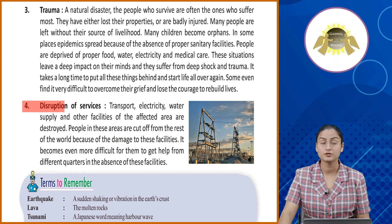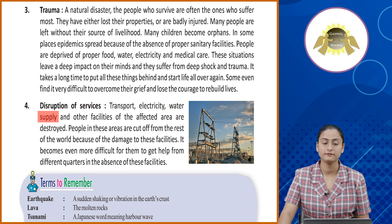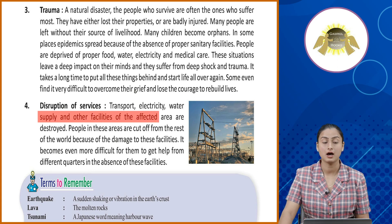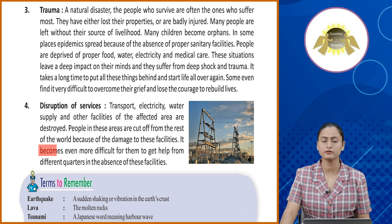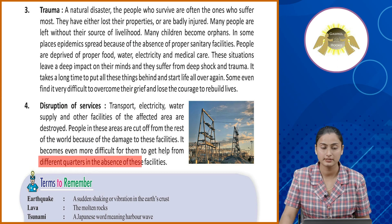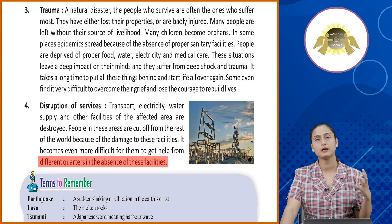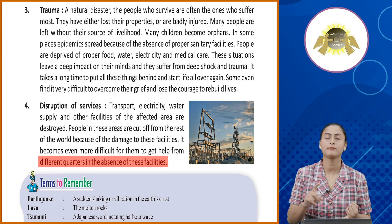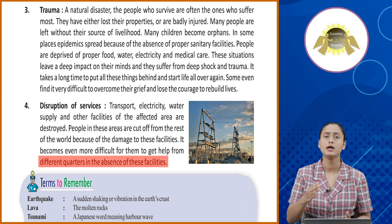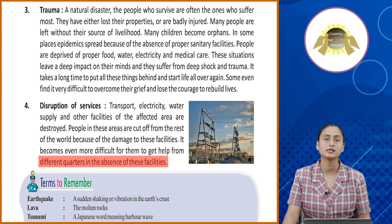Fourth, disruption of services. Transport, electricity, water supply and other facilities of the affected area are destroyed. People in these areas are cut off from the rest of the world because of the damage to these facilities. It becomes even more difficult for them to get help from different quarters in the absence of these facilities. Wherever there are natural calamities, water supply, electricity supply, communication services and different types of services that help humans — they are all closed. That is why you cannot communicate.